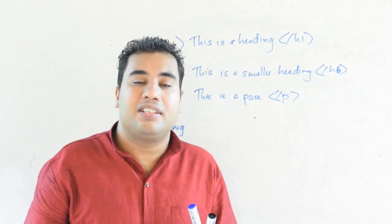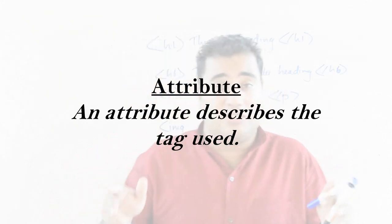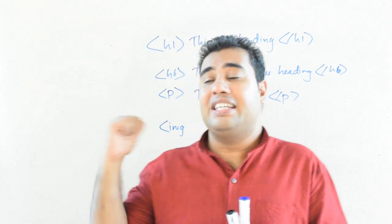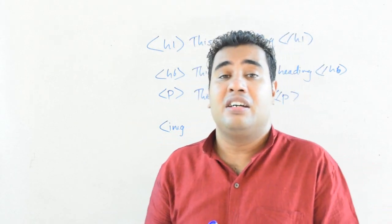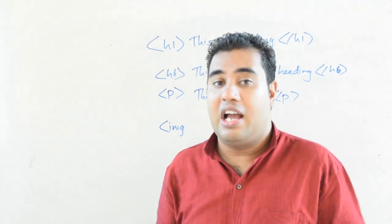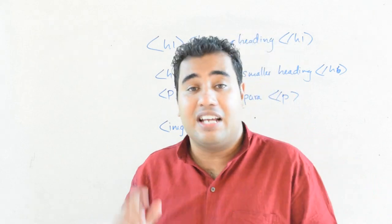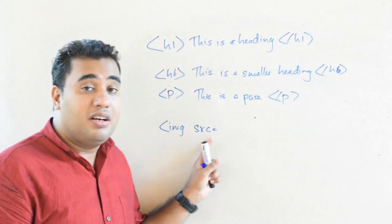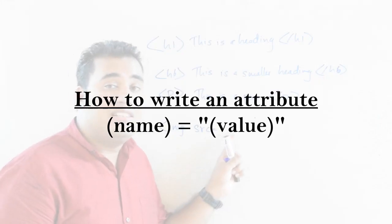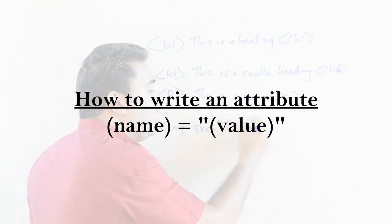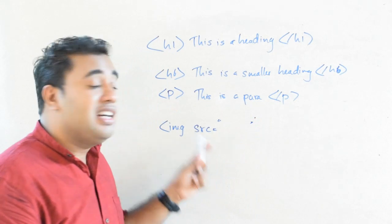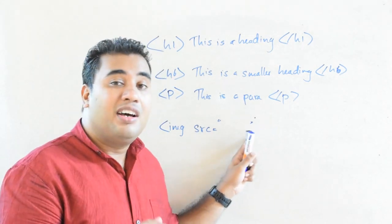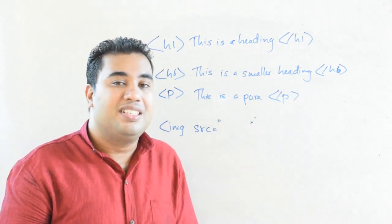To put an image we use the img tag. There is also a concept called attributes — an attribute defines or describes the tag. Attributes are used especially in the image tag and the hyperlink tag. For the image tag there is an attribute called src, or source. When writing an attribute, you put the attribute name, an equal sign, and the value within inverted commas.